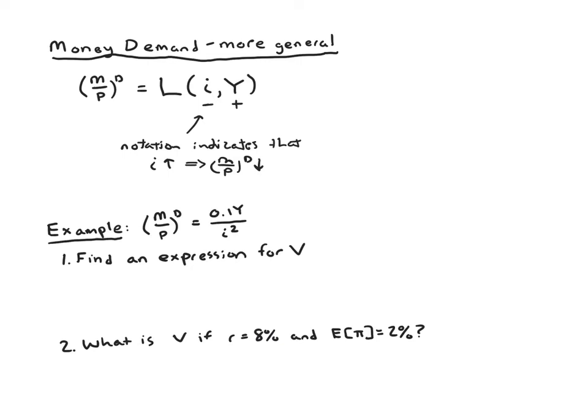And by the way, sometimes people ask, why do we use L here? It's because money is liquid. So in some sense, you could think of money demand as demand for liquidity. It's a preference for liquidity. And it turns out liquidity preference is the name of an important theory for short run or part of an important theory for short run fluctuations we'll study later this semester.